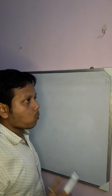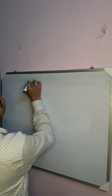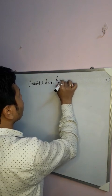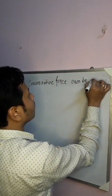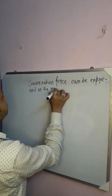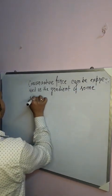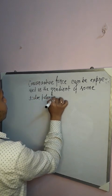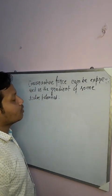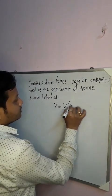Previously we heard that central force can be expressed as the gradient of some scalar potential. Similarly, a conservative force can be expressed as the gradient of some scalar potential. We know that potential energy in general is a function of position coordinates. Since dV is a perfect differential, it can be written as (∂V/∂x)dx + (∂V/∂y)dy + (∂V/∂z)dz.